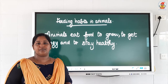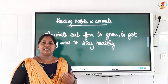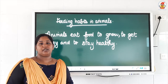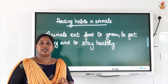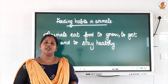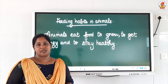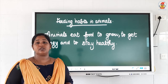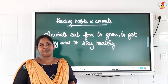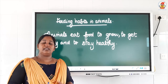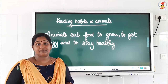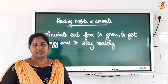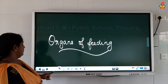Animals eat food in order to grow, to get energy, and to stay healthy. All animals including human beings have food. We eat different types of food, and according to the type of food, our mouth parts are changed or adapted. So the feeding habit of an animal and the mouth parts of an animal are closely related to the food that they eat.